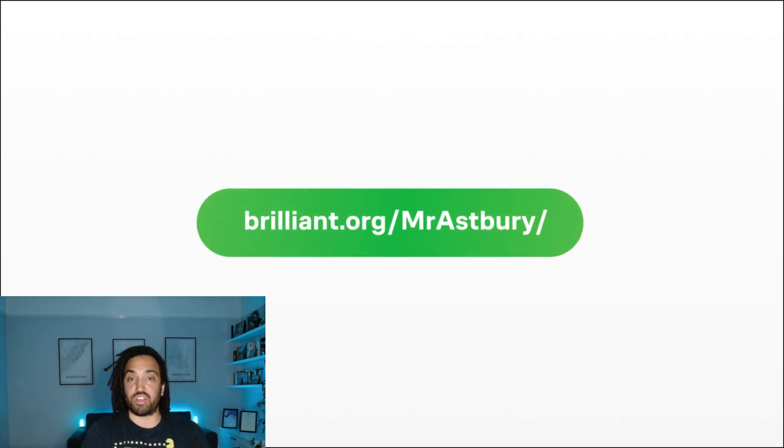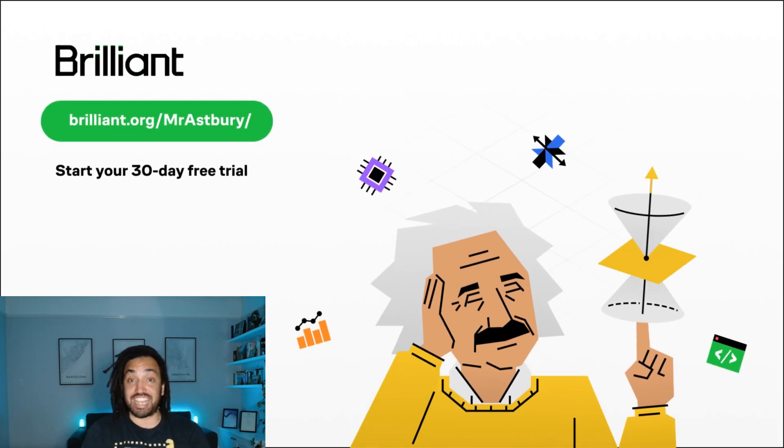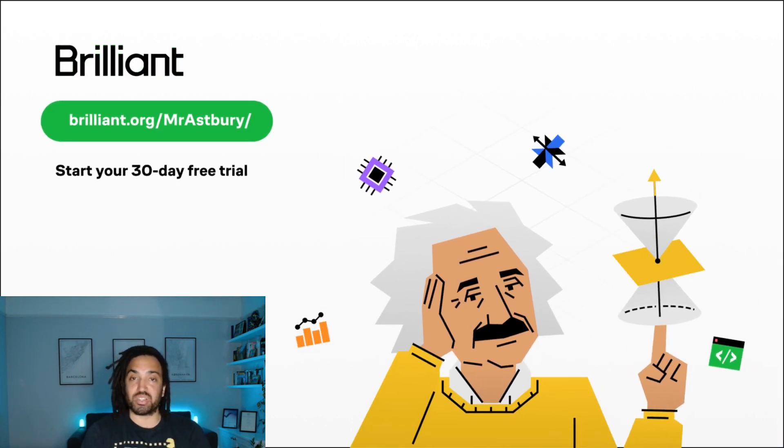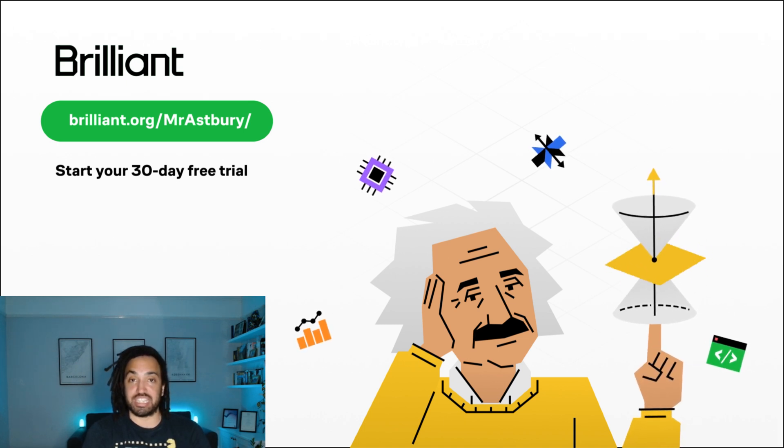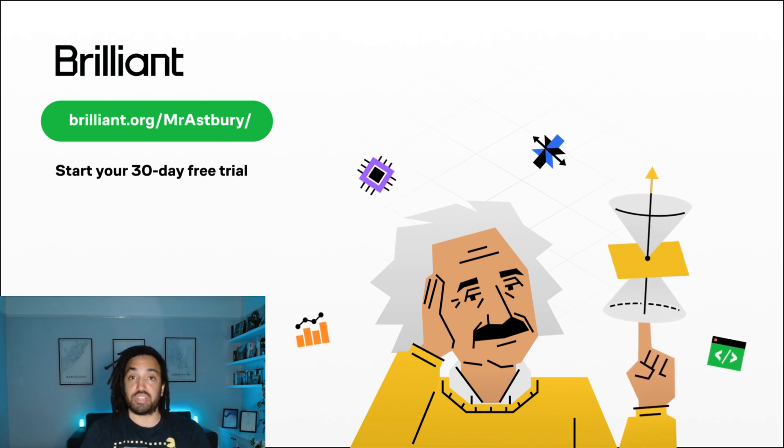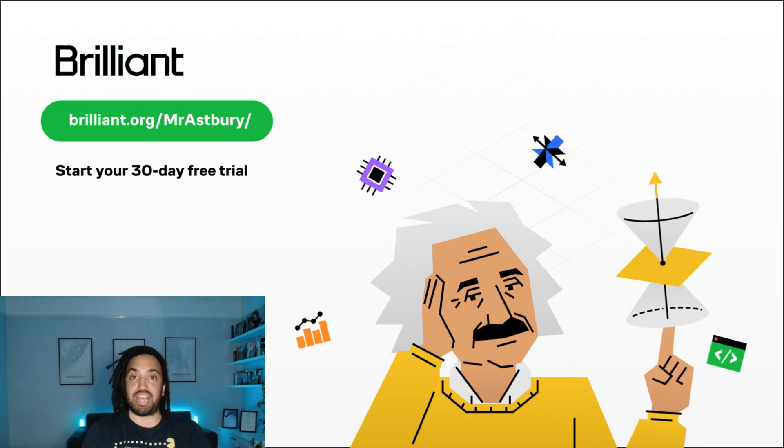And for viewers of this channel you could try everything that Brilliant has to offer free for a full 30 days. Just visit brilliant.org forward slash Mr. Asprey or click the link in the description and you'll also get 20% off a premium annual subscription.